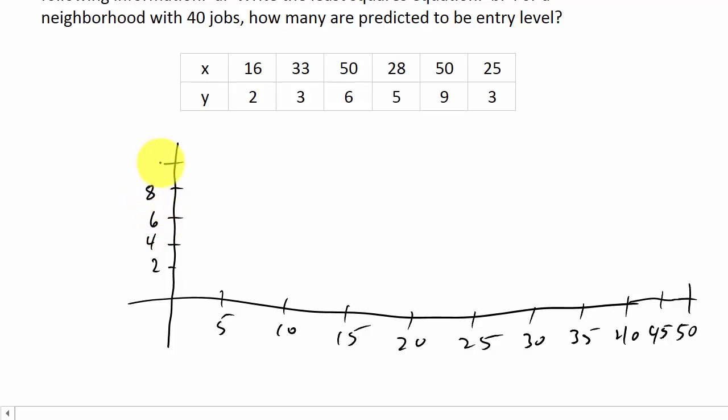You can plot the points—16, 2 would be about right there; 33, 3 is about right here; 50, 6 is that point; 28, 5 is about right there; 50, 9 is about right there; and 25, 3 is about right there. This is what our data looks like. We're going to try to find a line that fits that, something like that. What's the equation of that line?